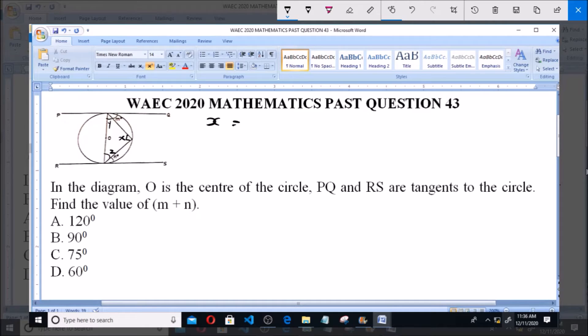Now, from here, we can say X is equal to 90 degrees. That is the angle of a semicircle. The angle made with the circumference of a semicircle is always 90 degrees. So X equals 90 degrees.